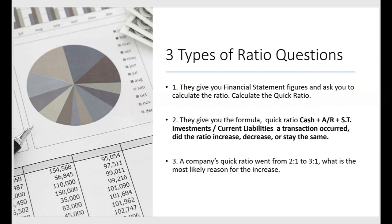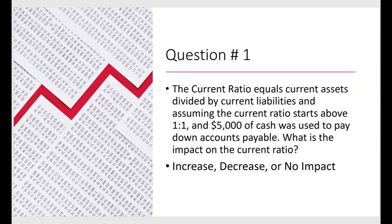Let's get started. Number one: the current ratio equals current assets divided by current liabilities. Assume the current ratio starts above one to one, and five thousand dollars of cash was used to pay down accounts payable. What is the impact on the current ratio — did it increase, decrease, or have no impact? The journal entry is a debit to accounts payable and a credit to cash. Both cash and accounts payable are going down by the same amount. Cash is in the numerator and accounts payable is in the denominator of the current ratio.